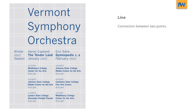Line. A line is the connection between points. We probably take lines for granted, but they can be a very useful design element. Notice how line is used in this Vermont Symphony Orchestra poster. While the line does form a grid, the actual typography doesn't follow the grid — the line is simply a design element.